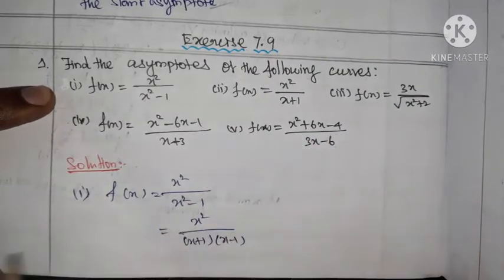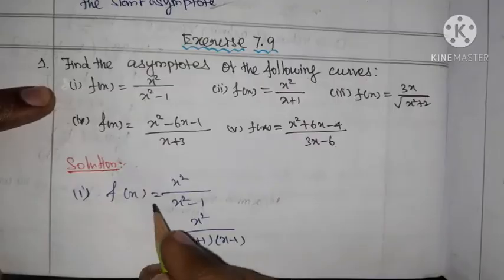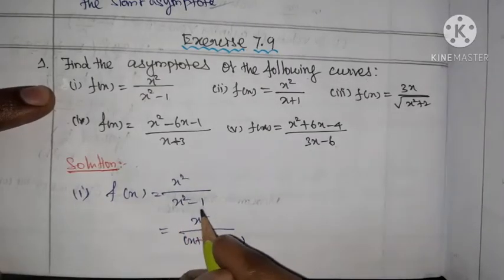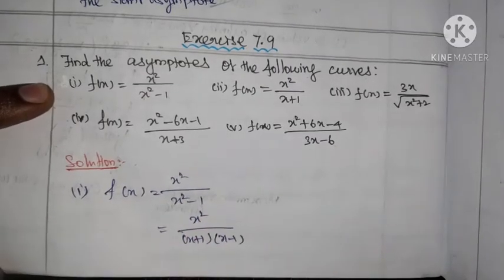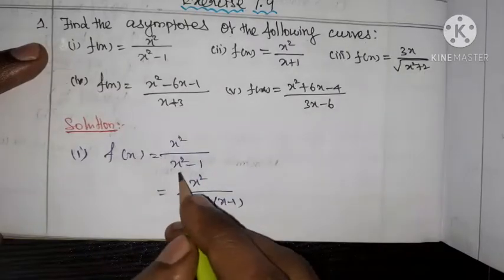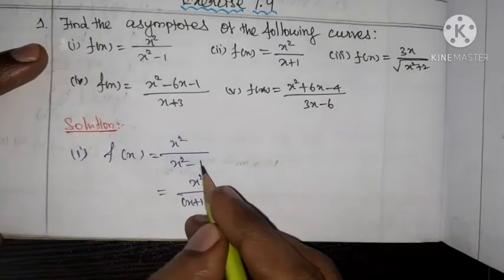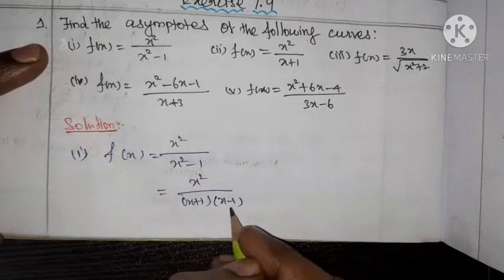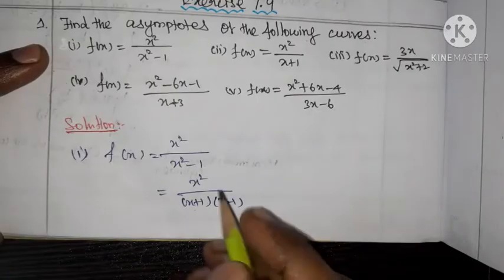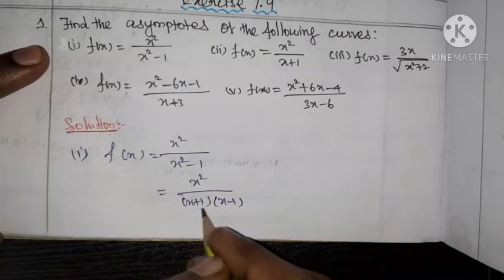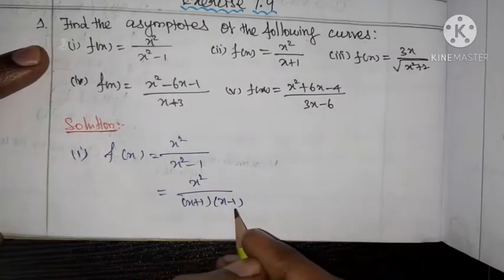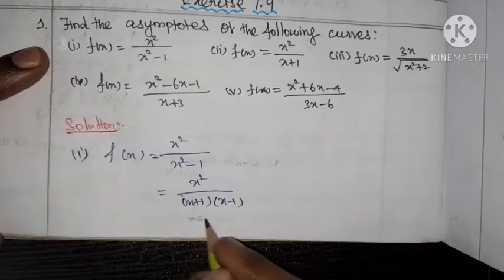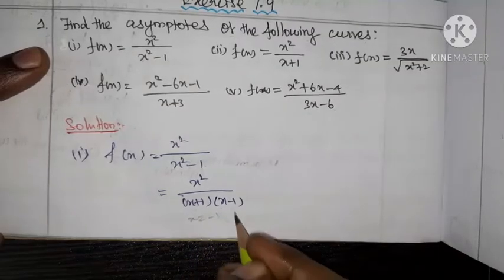Solution. First substitution: f(x) = x² / (x² - 1). We can write x² - 1 as a difference of squares — that is, a² - b² — in the format (a + b)(a - b). So f(x) = x² / [(x + 1)(x - 1)]. We get two values: x = -1 and x = +1.